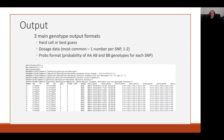Once we've done our imputation, if we used the Michigan imputation server, our data will be in VCF format. In this format, each line in the file represents a variant and each block of data represents an individual. The file contains our imputed data in three different formats. The first — before the semicolon — is a hard-call or best-guess genotype referring to the number of copies of the alternate allele. The second is the dosage format, which ranges between zero and two — a count of doses of the alternate allele. The third format, not used very often, is genotype probability format: the probability that an individual is AA, AB, or BB genotype for each SNP in our file.